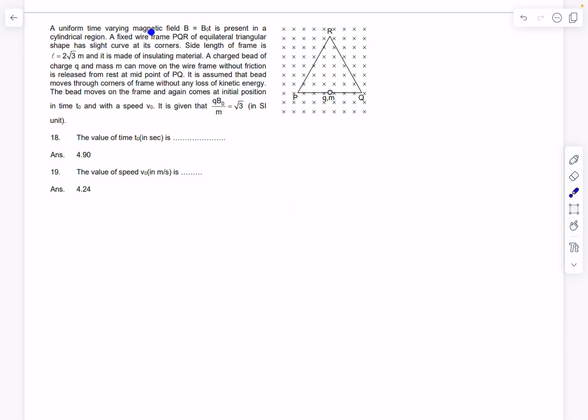We have a uniform time varying magnetic field B which is B0T, so dB/dt is pretty nice in this case. It changes at a constant uniform rate and is present in a cylindrical region.